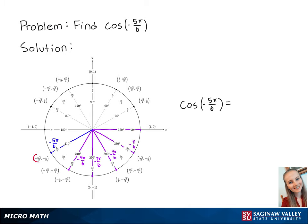Cosine correlates to the x-coordinate on the unit circle. So cosine of negative 5 pi over 6 is equal to negative square root of 3 over 2. And this is the final answer.